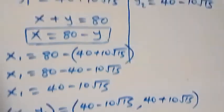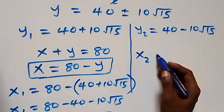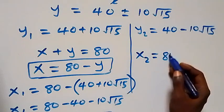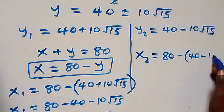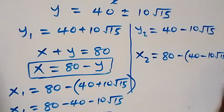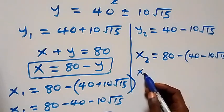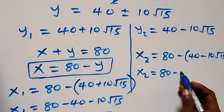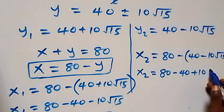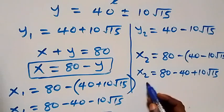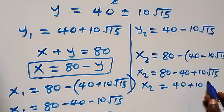For the second solution, x₂ = 80 − y₂ = 80 − (40 − 10√15) = 80 − 40 + 10√15, so x₂ = 40 + 10√15.